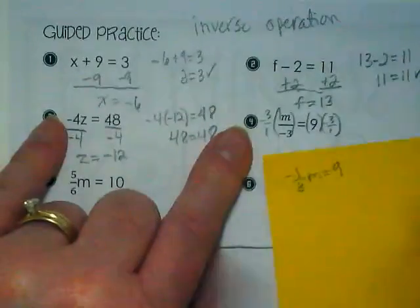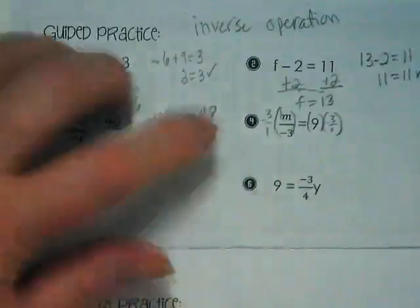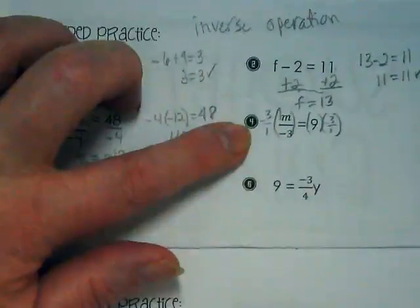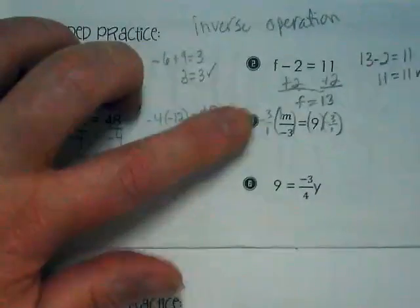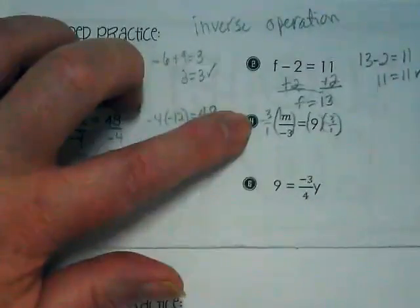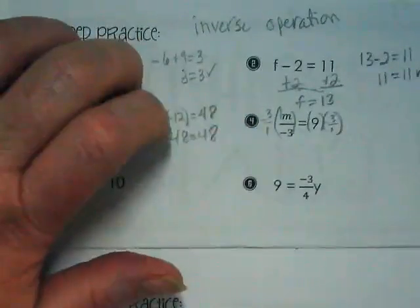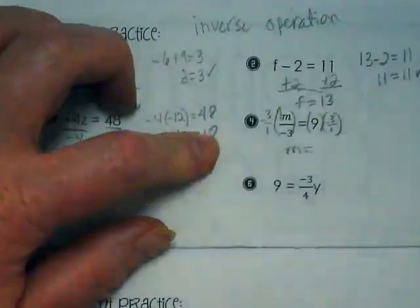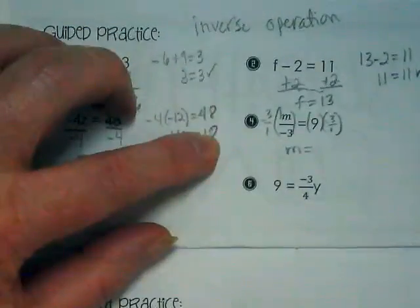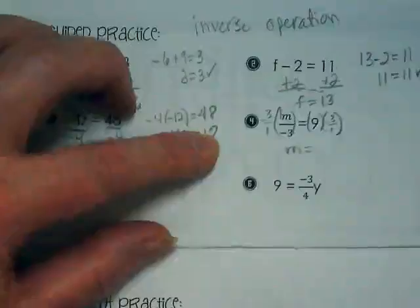And we do that to both sides. On the left side, are we going to get an invisible 1? Because I have negative 3 over 1 times negative 1 over 3. That's going to become positive 1. That means I have m on the left side of the equation. What do I have on the right? Negative 27.